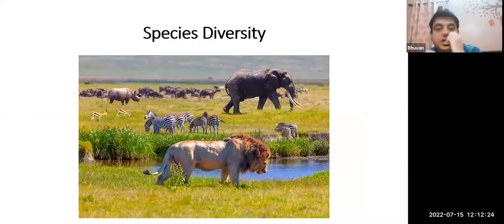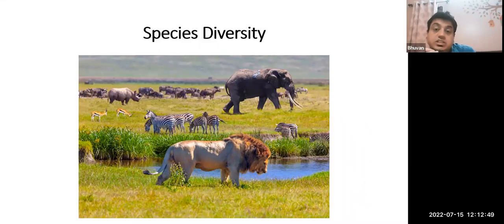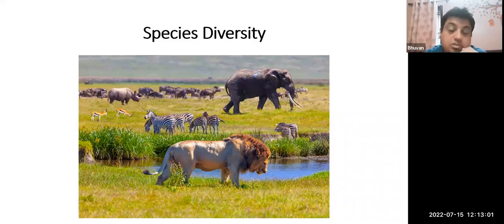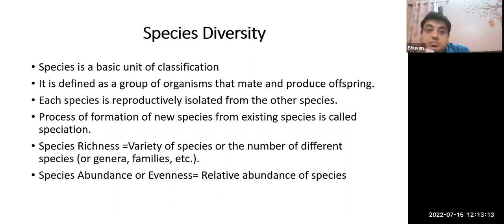A picture of the Serengeti in East Africa illustrates how different species — lion, elephants, zebra, wild buffalo, and Thompson's gazelle — coexist within the savannah grassland ecosystem, and how different species have co-evolved with each other. A species is the basic unit of biological classification, defined as a group of organisms that can mate with each other and produce fertile offspring.